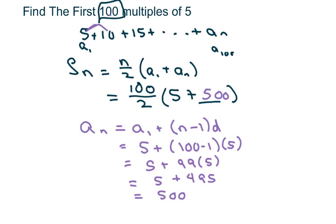So this is going to be 50 times 5 plus 500. You can distribute, or you can just use your calculator. And we'll get 25 times 5,250.